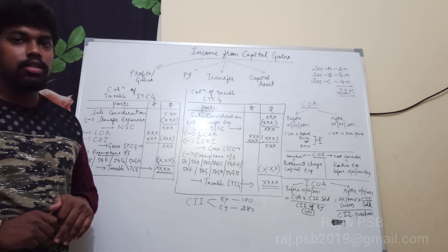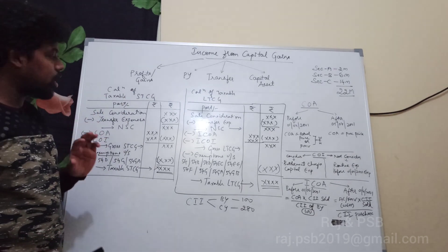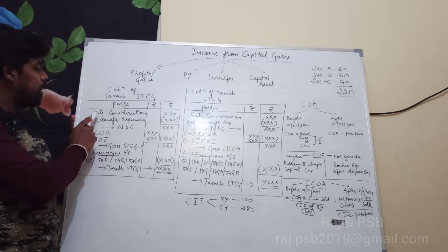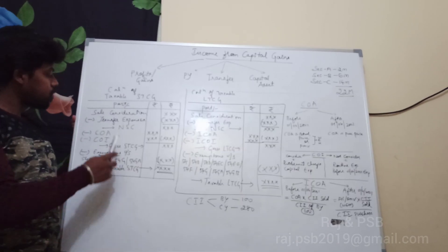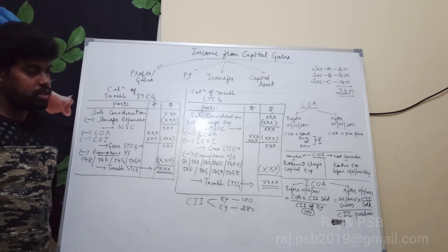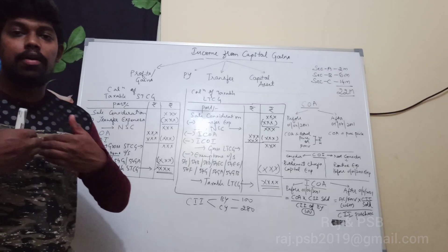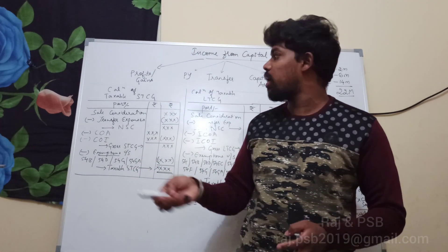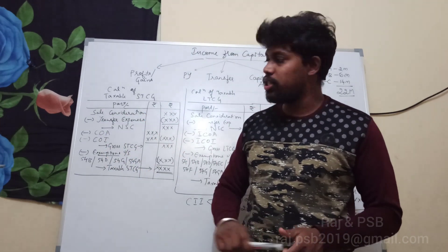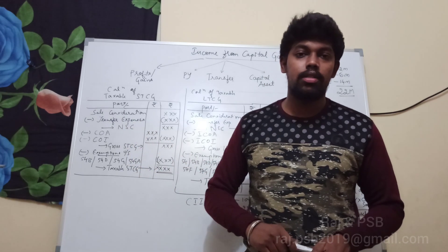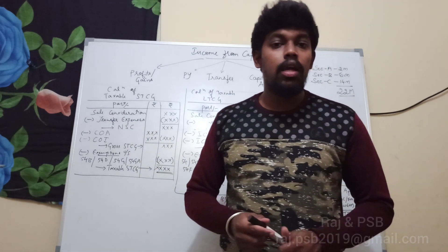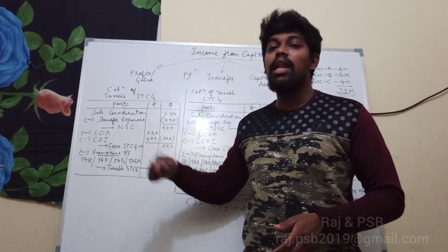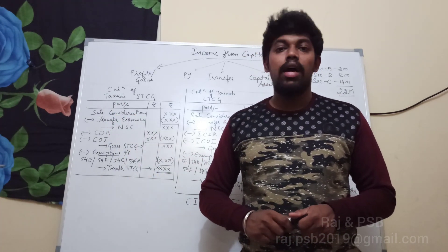The first step in calculating short-term capital gain is: take the sale consideration — that is, the amount received when you sell the asset — and deduct transfer expenses. Transfer expenses are any expenses incurred while selling the asset.